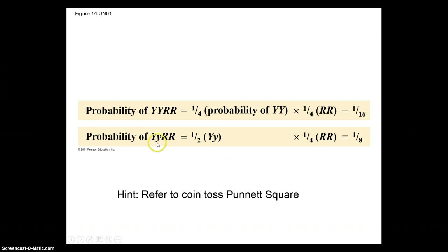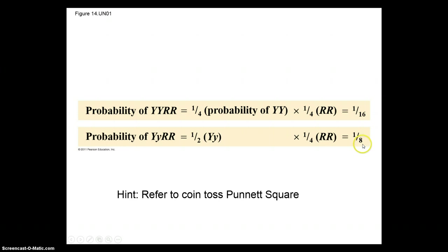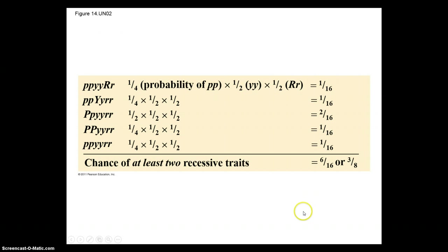The probability of getting Yy is one-half, and the probability of getting RR remains one-quarter. So the probability of getting Yy RR is one-half times one-quarter, which gives a probability of one-eighth. You can apply this method to determine the probabilities for all trait combinations.